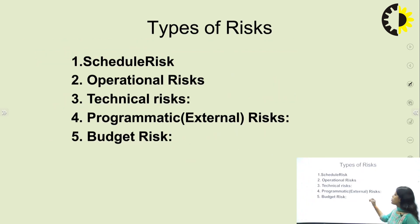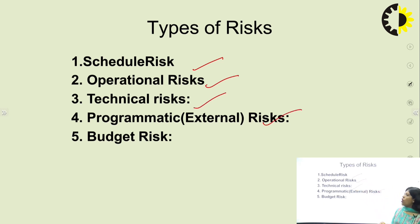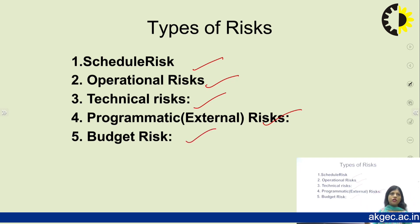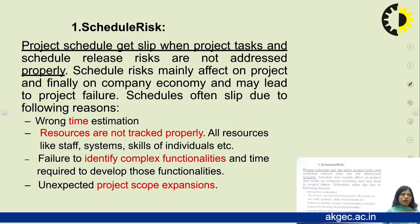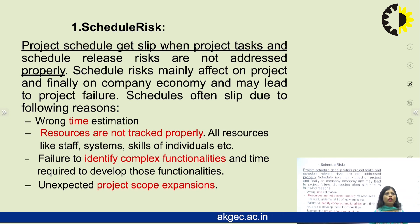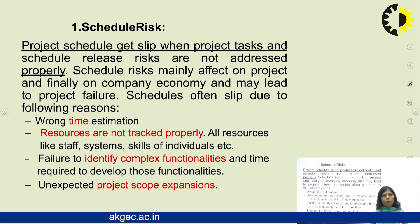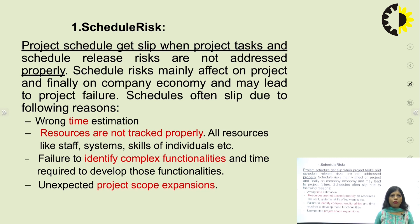The types of risk are: scheduled risk, operational risk, technical risk, external or programmatic risk, and budget risk. Scheduled risk occurs when project tasks and schedule release risks are not addressed properly. It mainly affects the project and finally the company's economy, possibly leading to project failure because the project is not completed on time. Reasons for scheduled risk include wrong time estimation and resource issues.